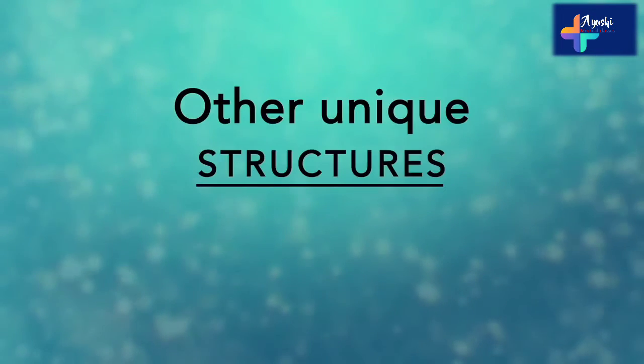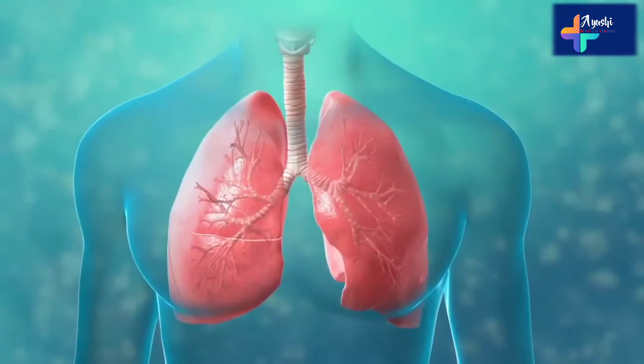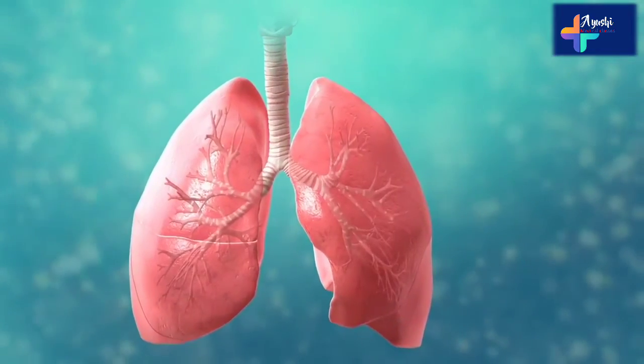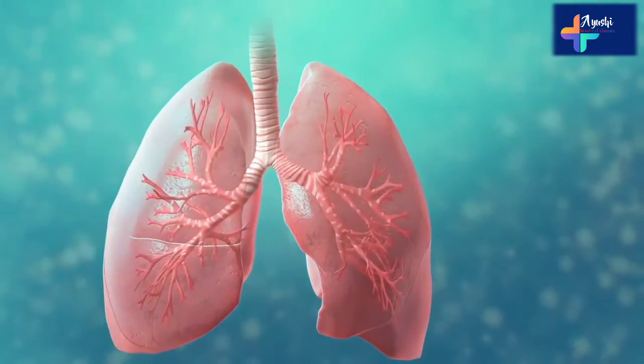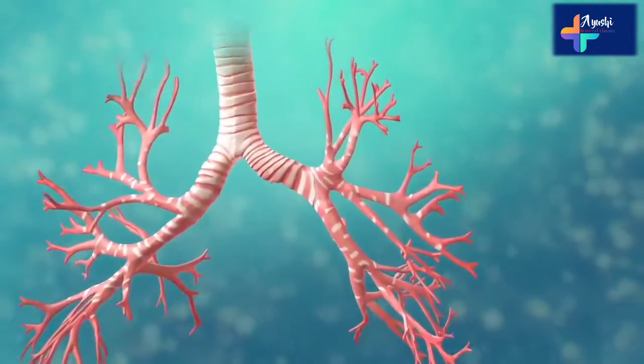There are many other unique structures that only some cells have. Here are just a few. In humans, for example, the respiratory tract is lined with cells that have cilia. These are microscopic, hair-like projections that can move in waves. This feature helps trap inhaled particles in the air and expels them when you cough.